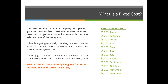A fixed cost is a cost that a company must pay for goods or services that constantly remain the same. It does not change based on an increase or decrease in sales volume of the company. For example, I have to pay the mortgage on the building of my company every single month no matter what. It doesn't matter if I bring in $8 million worth of printing jobs in January and $1 million in February — I'm still paying $5,200 every single month for the mortgage on the facilities.